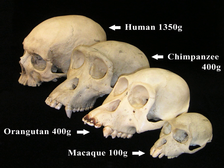Evolutionary psychology is the study of psychological structures from a modern evolutionary perspective. It seeks to identify which human psychological traits are evolved adaptations — the functional products of natural selection or sexual selection in human evolution. Evolutionary biology is the study of the evolutionary processes that produced the diversity of life on Earth, starting from a single common ancestor. These processes include natural selection, common descent, and speciation.